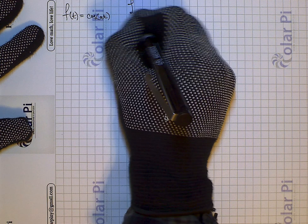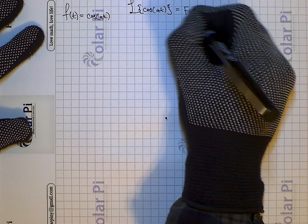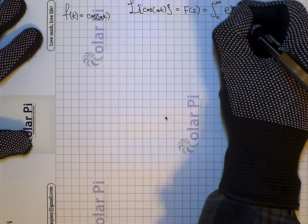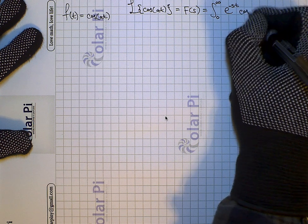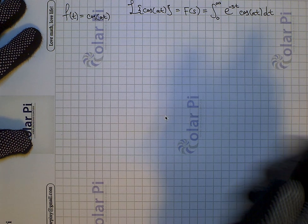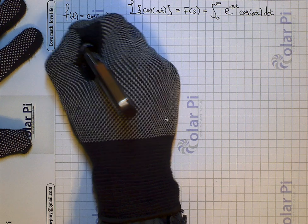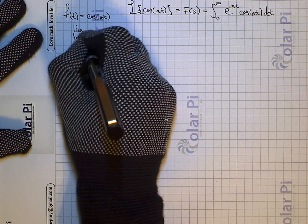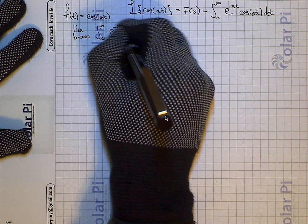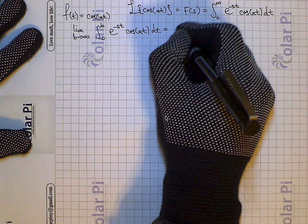So using the definition, we know that L of cosine of at, which we can write as capital F of s, is the integral from zero to infinity of e to the negative st times cosine of at dt. And now we're going to use correct grammar on this improper integral and write the limit as b goes to infinity of the integral from zero to b of e to the negative st times cosine of at dt. I'm going to call this capital B.